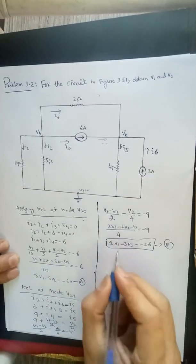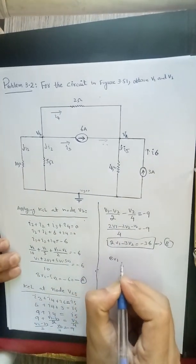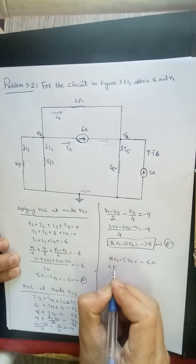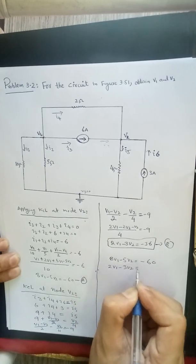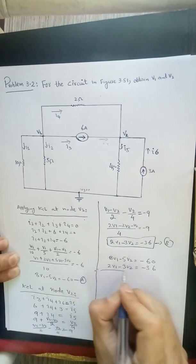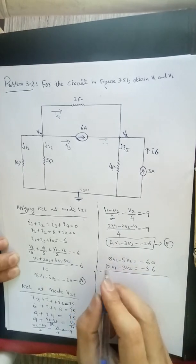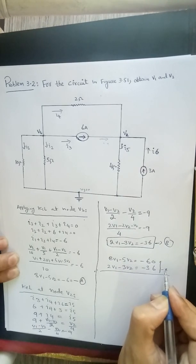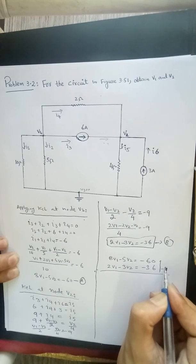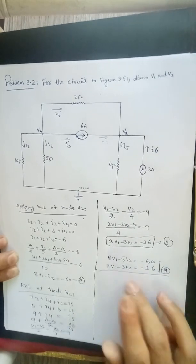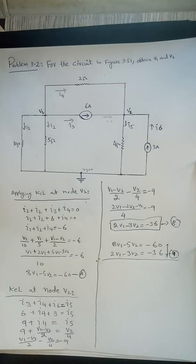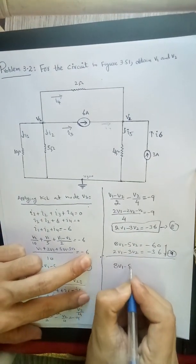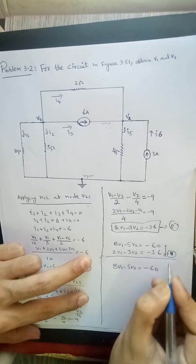Now we have two equations. First one is 8V1 minus 5V2 equal to minus 60, equation A. And we can write 2V1 minus 3V2 is equal to minus 36, equation B. You can multiply minus 4 with this. You can multiply minus 4 with this.